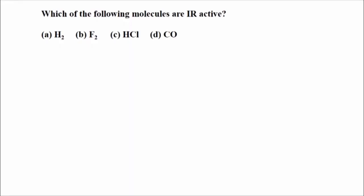The first problem: which of the following molecules are IR active — H₂, F₂, HCl, and CO? H₂ and F₂ are homonuclear diatomic molecules and are IR inactive. HCl and carbon monoxide are heteronuclear diatomic molecules, so HCl and CO will be IR active. The correct answers are C and D.